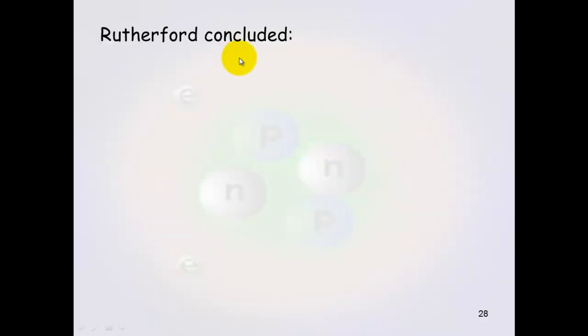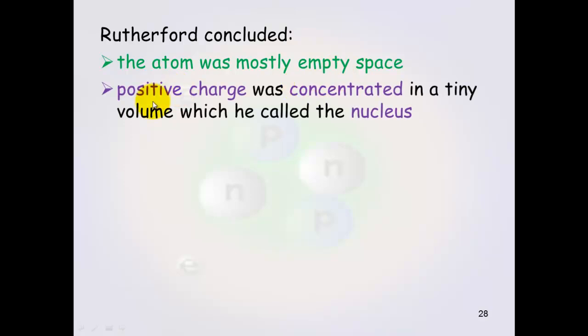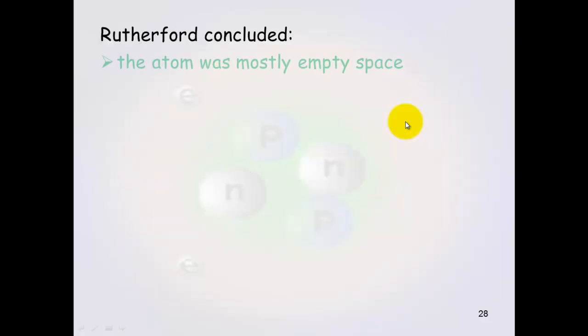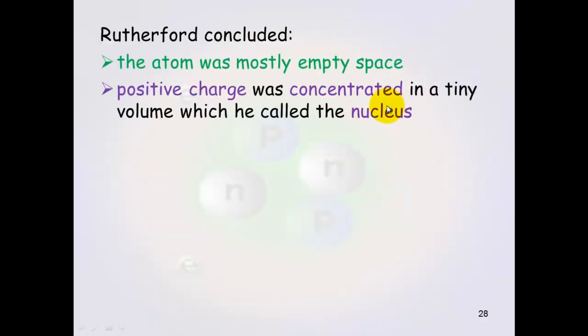So from this, Rutherford concluded that the atom was mostly empty space. Again, because most of the alpha particles went straight through. And that the positive charge was concentrated in a tiny volume which he called the nucleus. Remember, most of them went through, only a few bounced back. And that's why it had to be a very, very small center. And he called it the nucleus.